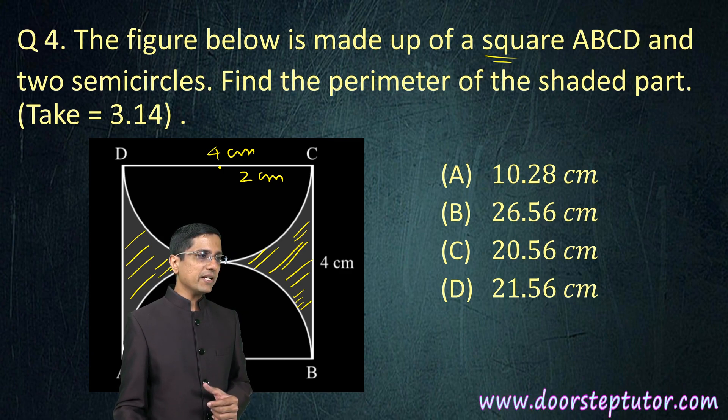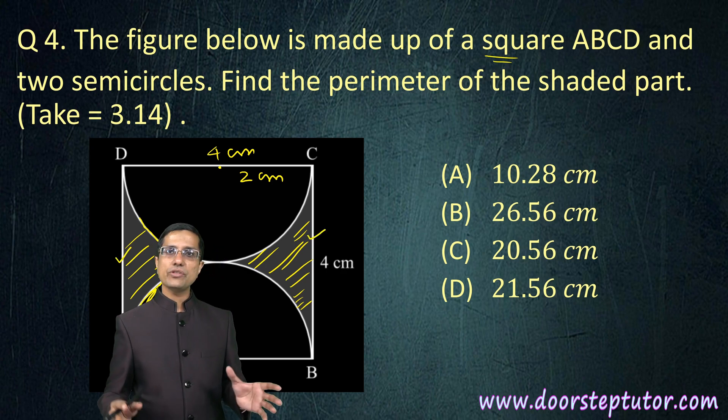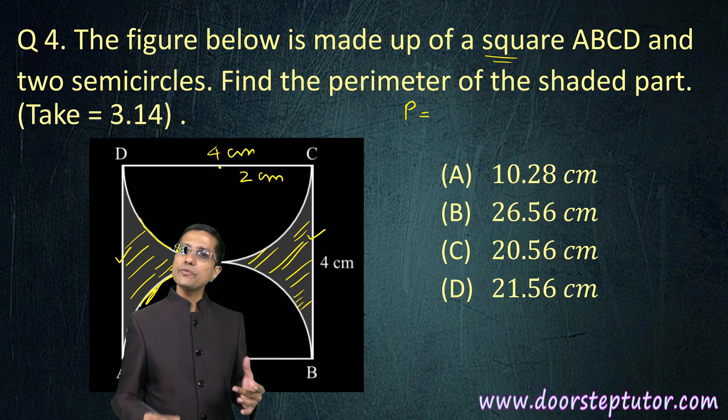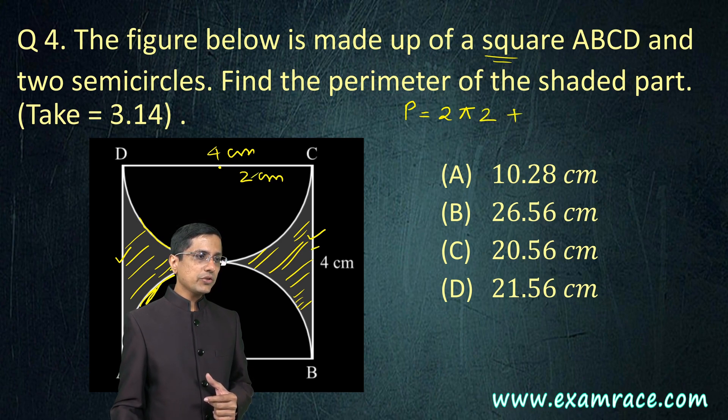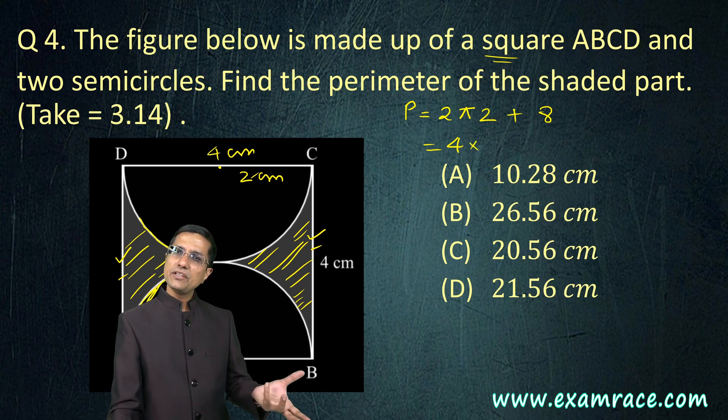We need to find the perimeter of this region. If you look at it closely you will find that the perimeter consists of two semicircles - one here and the other one here. These two semicircles plus this line and this line they together form the perimeter. The perimeter p equals the circumference of this circle, because two half circles means one full circle. So circumference is 2 into pi into r where r is 2 centimeter, plus these two lengths which is 4 plus 4 which is 8.